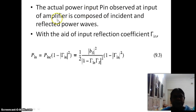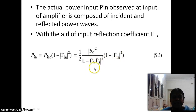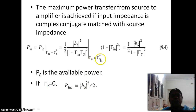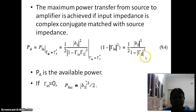The actual power input P_in observed at the input of the amplifier is composed of incident and reflected power waves. With the aid of the input reflection coefficient gamma_in, P_in equals P_incident times (1 - |gamma_in|²), which gives (1/2)|Bs|² times (1 - |gamma_in|²) divided by |1 - gamma_in * gamma_S|². For maximum power delivery, gamma_in should equal gamma_S* (complex conjugate matching). Replacing gamma_in with gamma_S*, the available power P_A simplifies to (1/2)|Bs|² times (1 - |gamma_S|²). If gamma_N equals 0, the incident power equals |Bs|²/2.